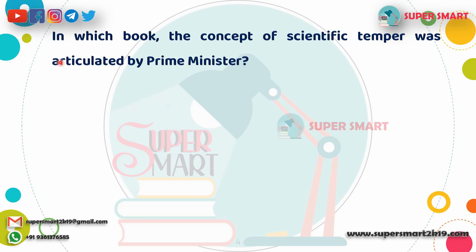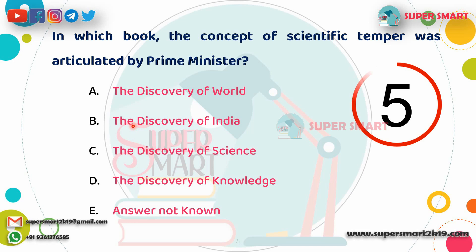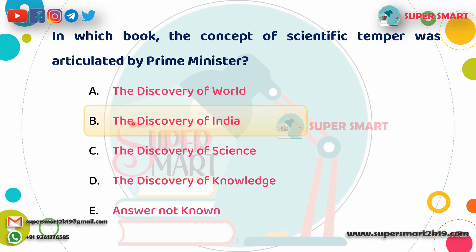Second question: In which book was the concept of scientific temper articulated by a Prime Minister? The concept of scientific temper was identified through a book by Prime Minister Jawaharlal Nehru.